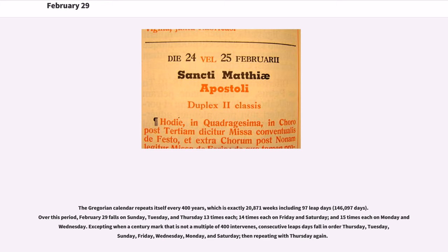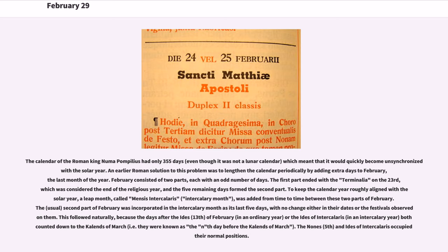The calendar of the Roman king Numa Pompilius had only 355 days, which meant that it would quickly become unsynchronized with the solar year. An earlier Roman solution was to lengthen the calendar periodically by adding extra days to February, the last month of the year. February consisted of two parts, each with an odd number of days, the first part ending with the Terminalia on the 23rd.